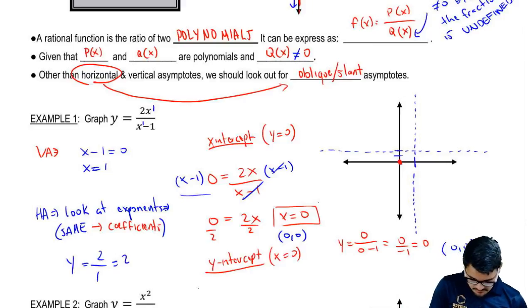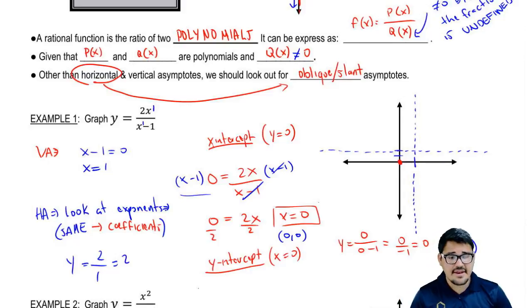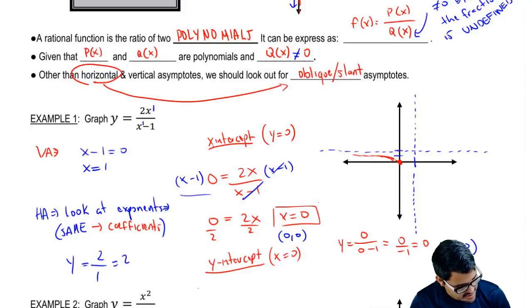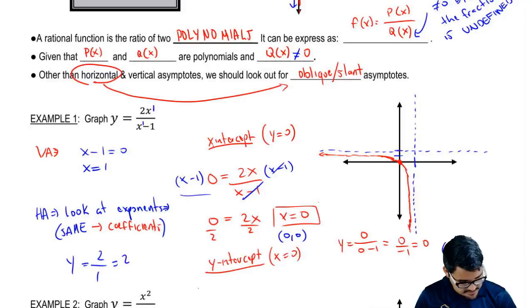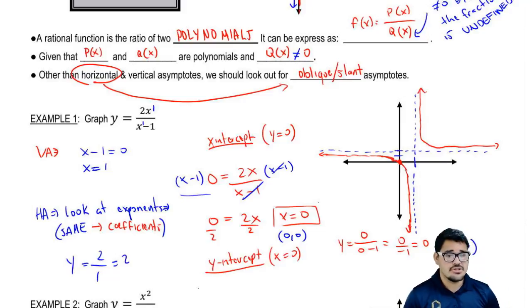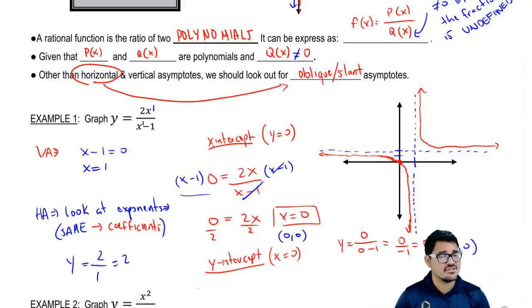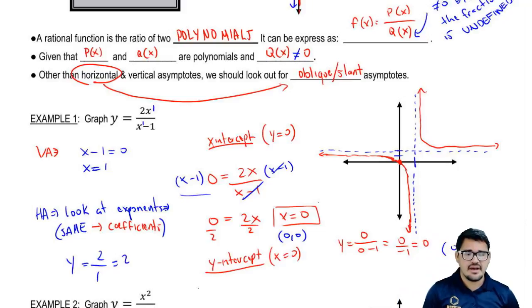So our function needs to go through the point (0, 0) and it needs to border our asymptotes. Getting so close to the asymptote but not touching it, we go all the way down — really, really close but not touching. That's the third quadrant part. And now the first quadrant part: we get so close to the vertical asymptote but we don't touch it, and then we get so close to the horizontal asymptote but we don't touch it. That's how we successfully draw a rational function.